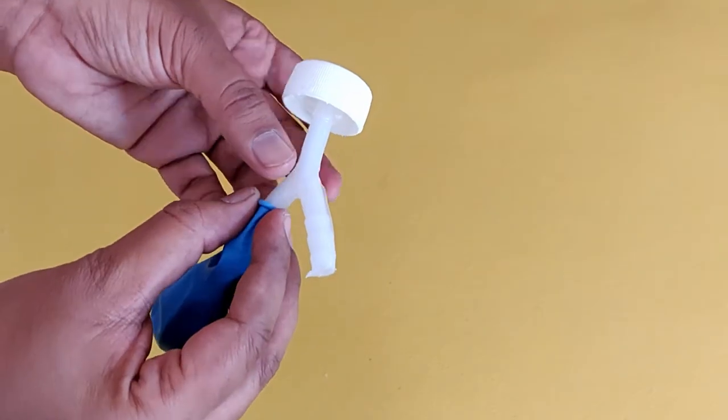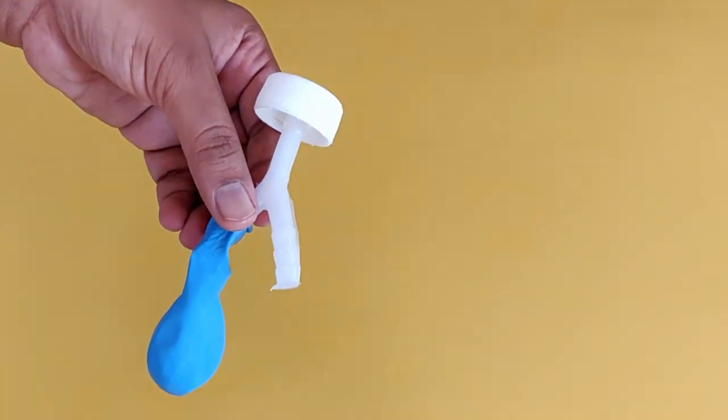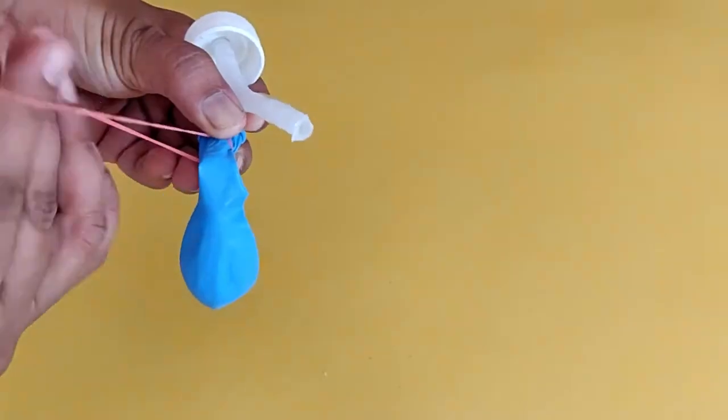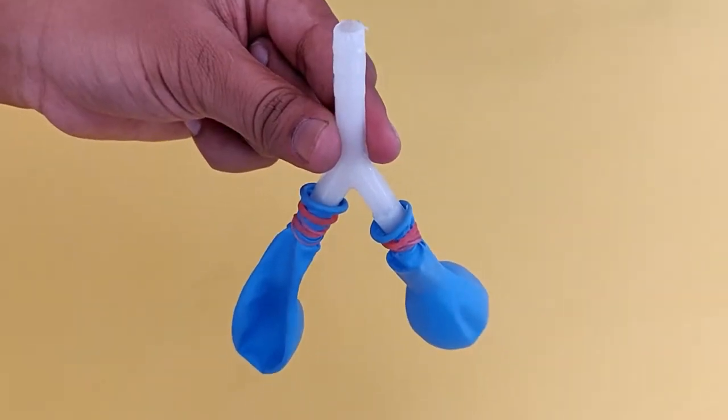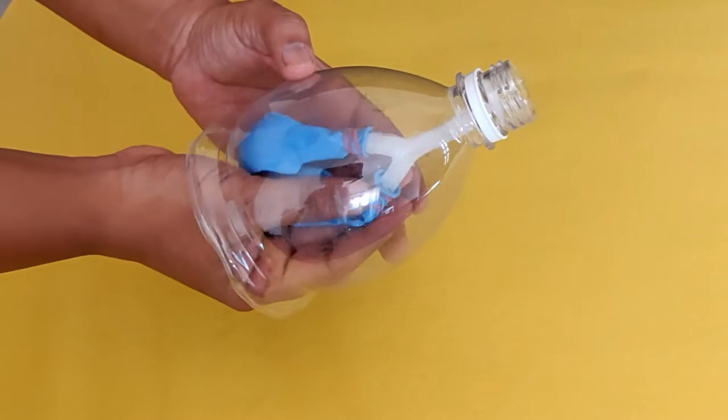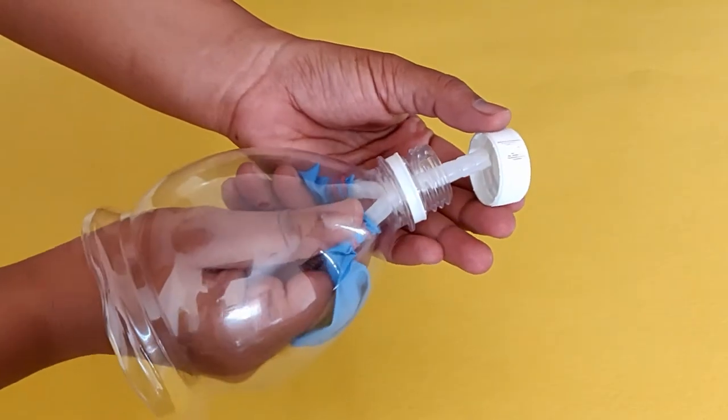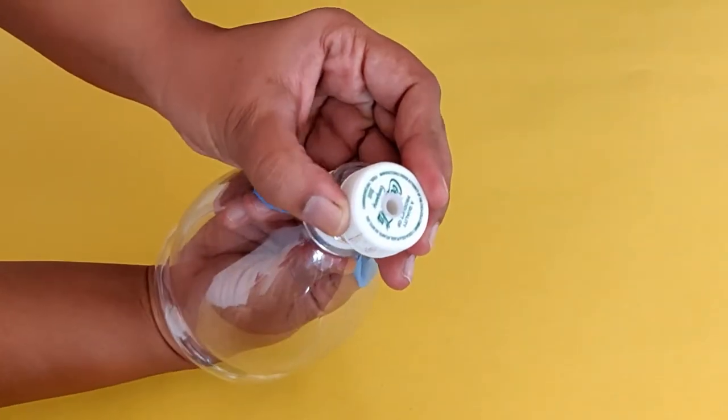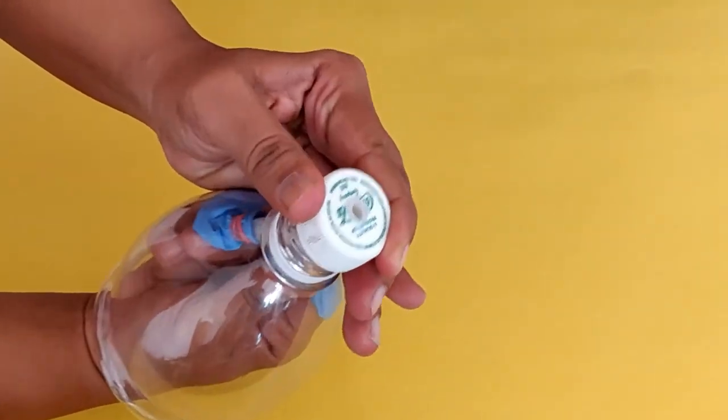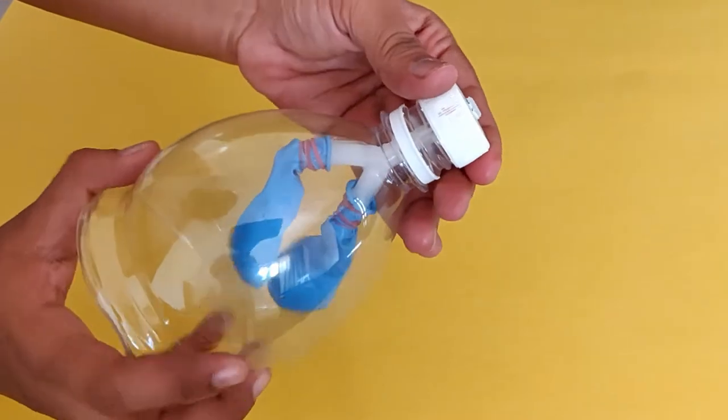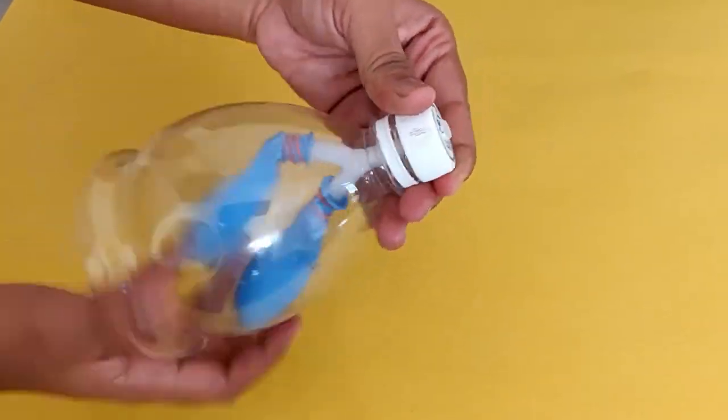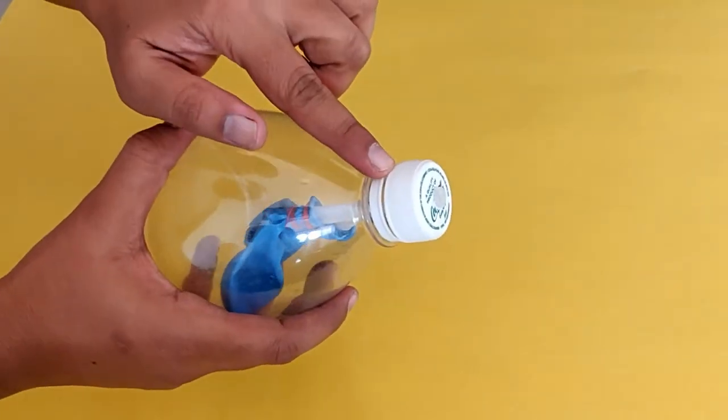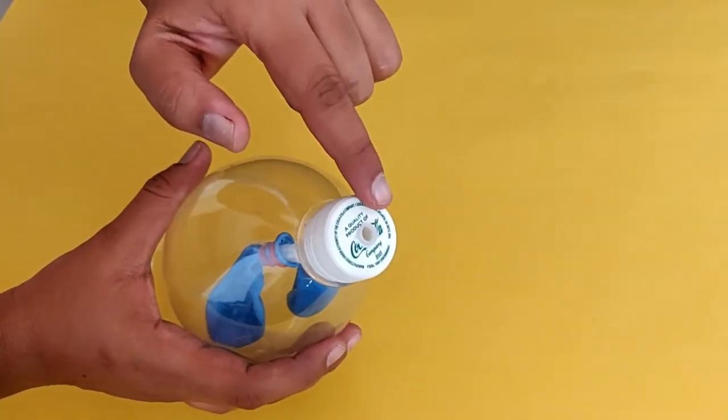Secure the two small balloons to the Y-ends of the Y-tube with rubber bands or thread like this. Pass the Y-tube through the bottle and insert the single end of the tube into the hole in the lid that you had made earlier. Screw the bottle lid tightly. Apply some glue or hot wax around the hole in the lid to ensure it is airtight.